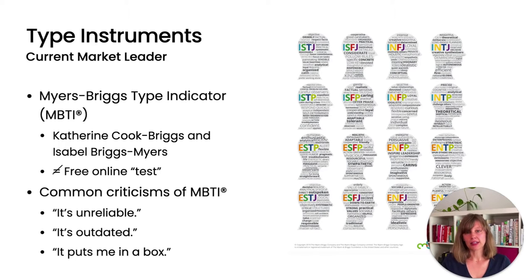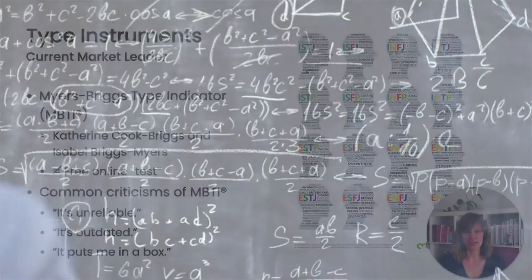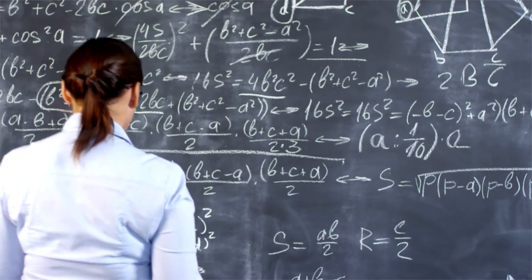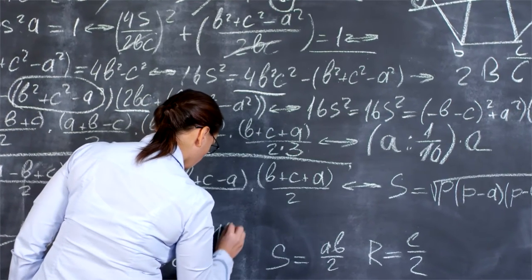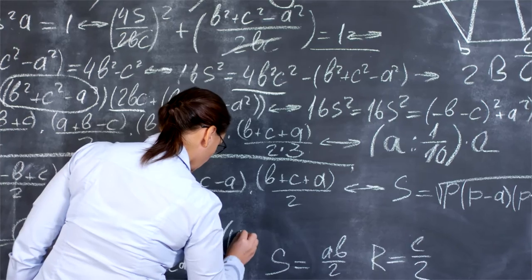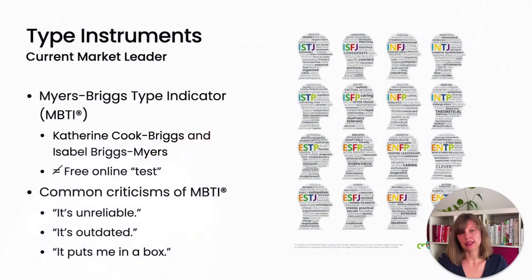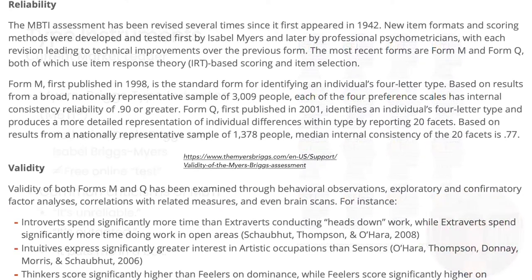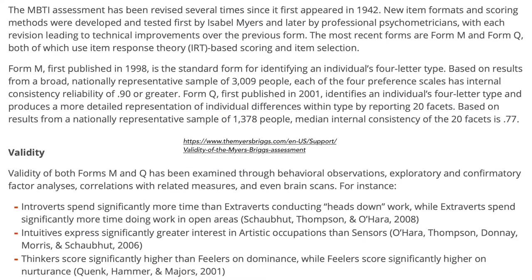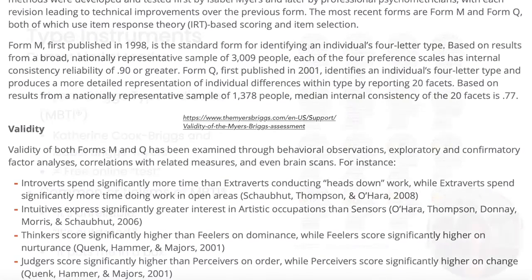Some people think the MBTI is outdated. Historically, the first versions came together in the 1940s. Isabel Myers then sifted through thousands of responses, manually correlating results and refining the forms with everything she learned until she passed away in 1980. In 1998, the current Form M was constructed in collaboration with psychologists and statisticians using item response theory. You can find information about the reliability and validity on their website.